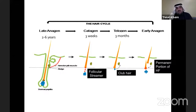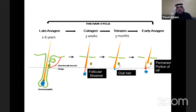The hair cycle is really important to understand — it helps explain why hair sheds. Most of our hair is in anagen phase; if you pluck a hair and it doesn't come out easily, that's anagen hair. If you gently rub your scalp and find hair in your hand, that's telogen hair. Most hair stays in anagen for two to six years, then shifts to catagen for three weeks, and finally to telogen for three months before shedding.